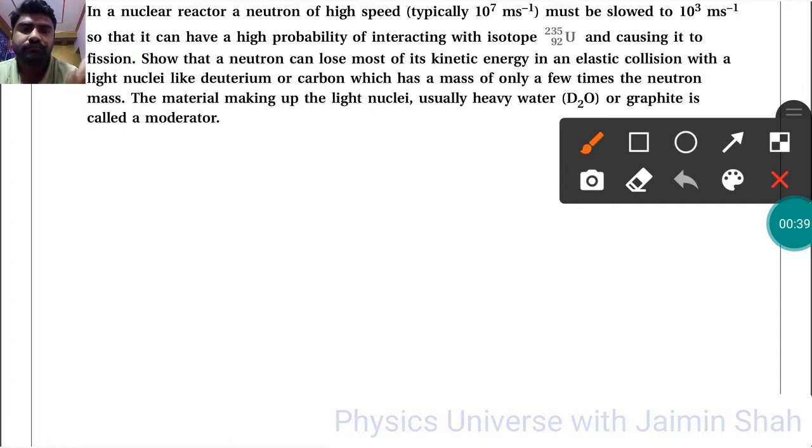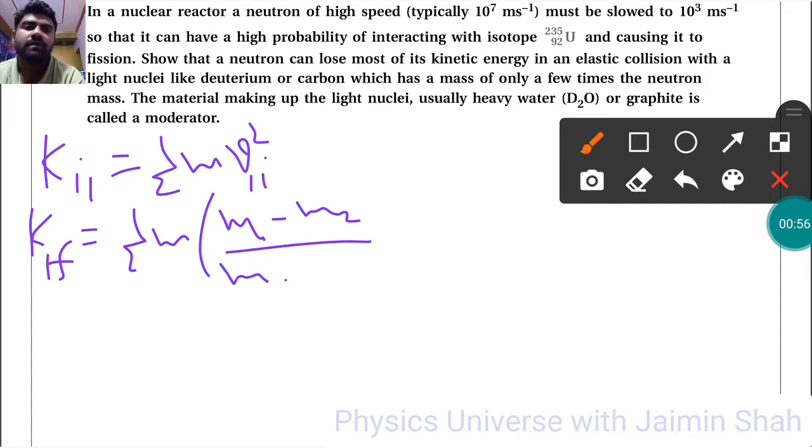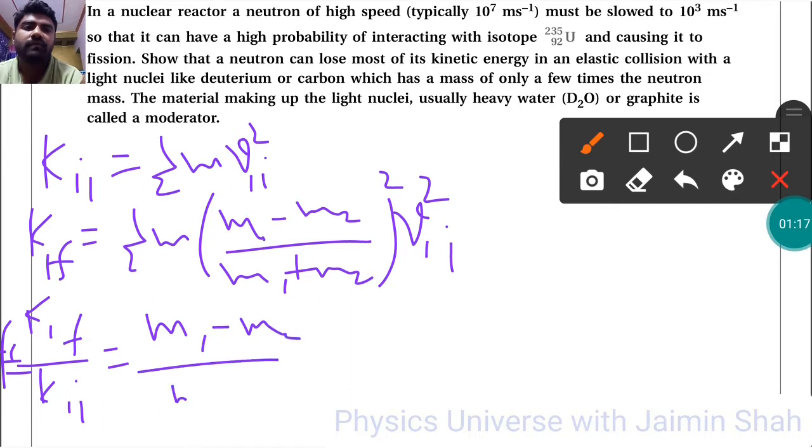The kinetic energy initial is K₁ᵢ = ½m₁V₁ᵢ². The final kinetic energy is K₁f = ½m₁[(m₁ - m₂)/(m₁ + m₂)]²V₁ᵢ². If we find the ratio of K₁f to K₁ᵢ, that is f₁, we get f₁ = [(m₁ - m₂)/(m₁ + m₂)]², where ½m₁ cancels out.